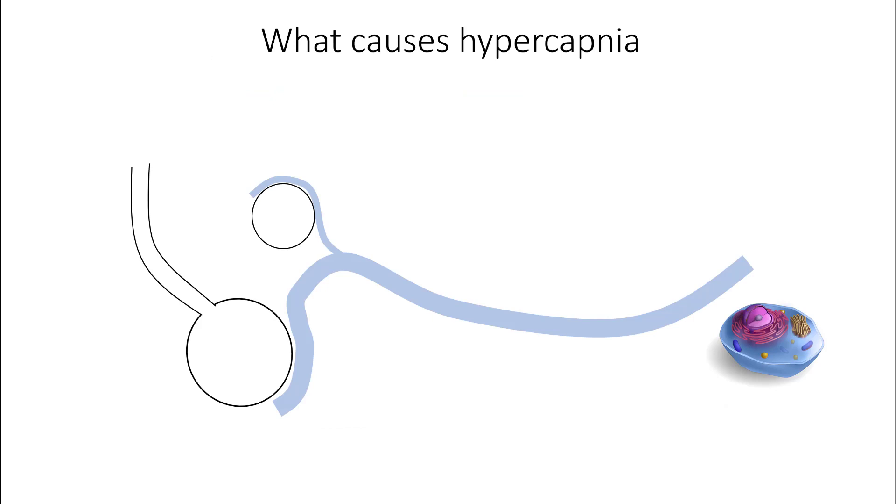So let's understand what are the various reasons for hypercapnia. CO2 can rise if you are making more CO2, that means there is increased production of CO2, and this can happen with increase in muscular activity, as seen in increased work of breathing, seizures, agitation, serotonin syndrome, and malignant hyperthermia. And it can also be seen in hypermetabolic states such as fevers, sepsis, and hyperthyroidism.